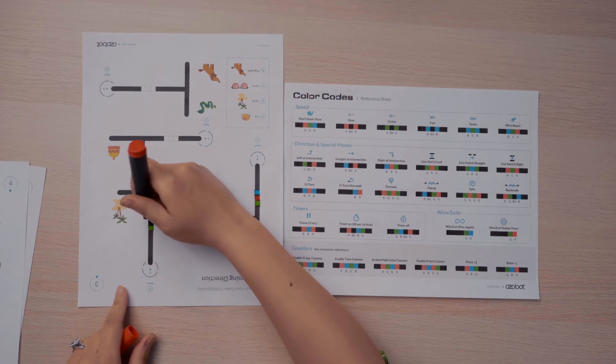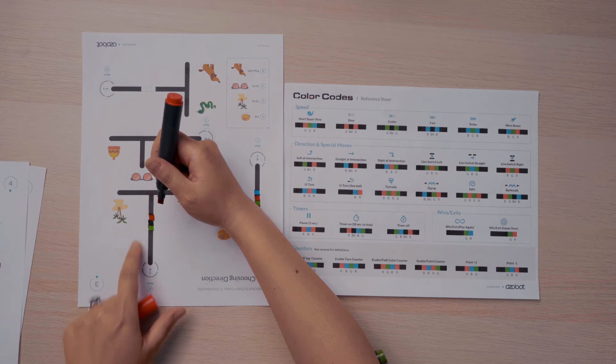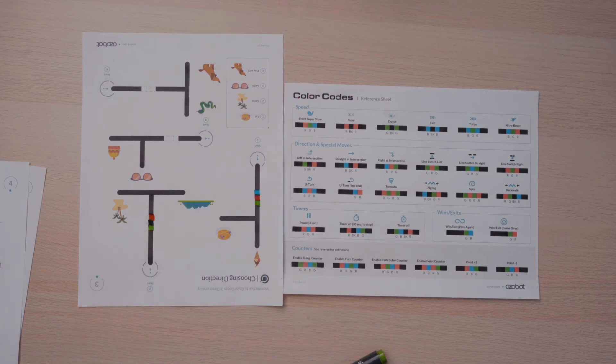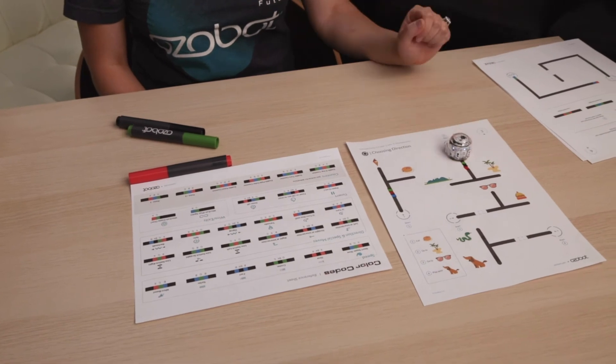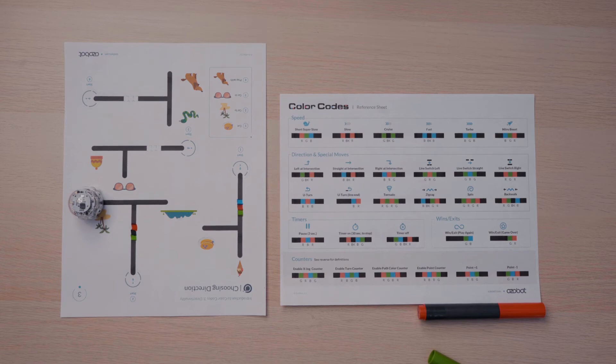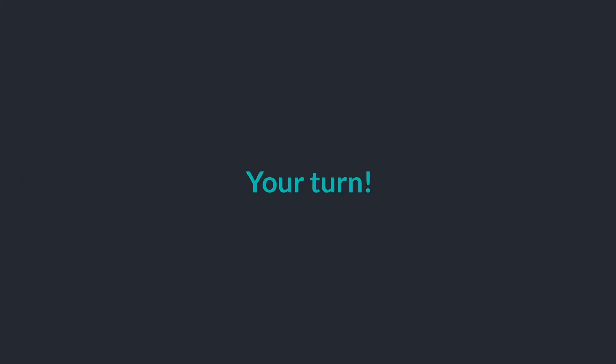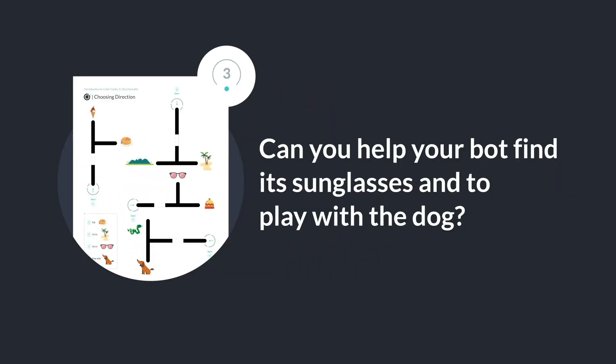And I know that green starts in this square because the bot's coming from this direction and it's going to read green first. So let's try it and see. I'll place my bot on the black line and have it travel over the color code to see if it makes it to the beach. Indeed it did! Nice work! See if you can complete three and four on your own.